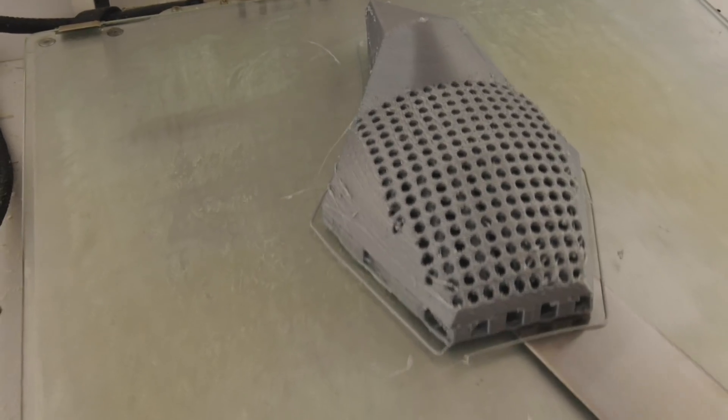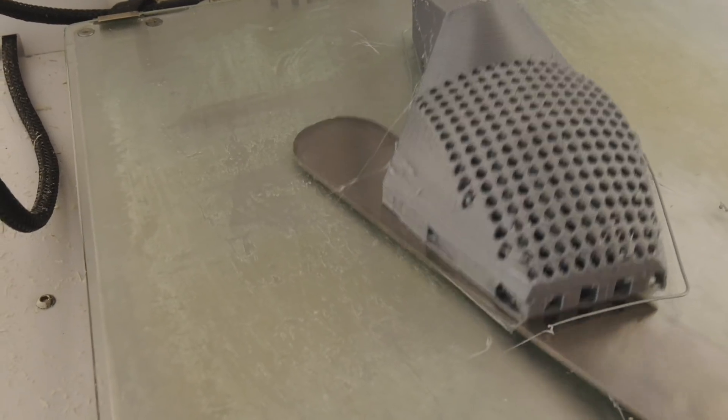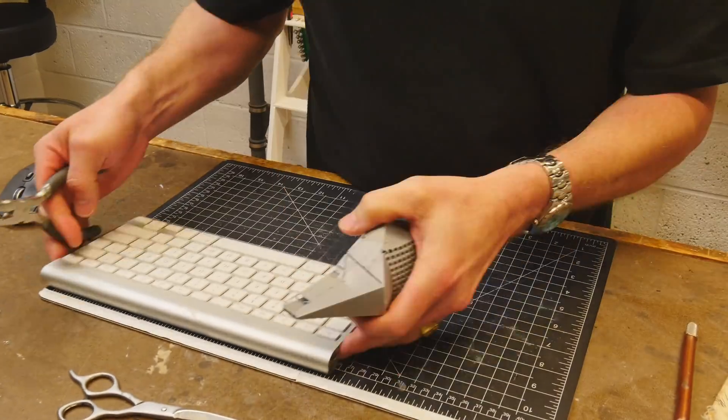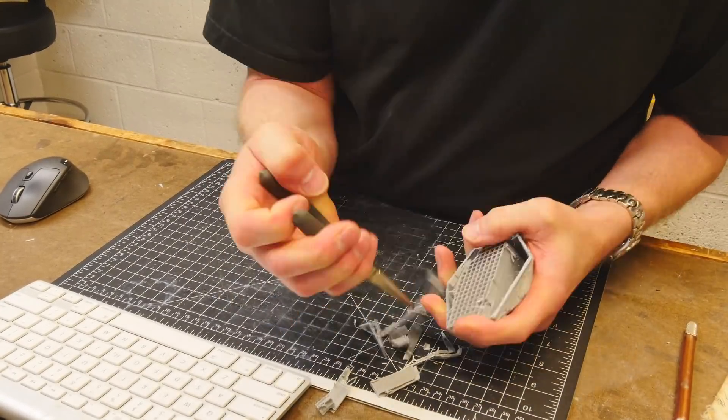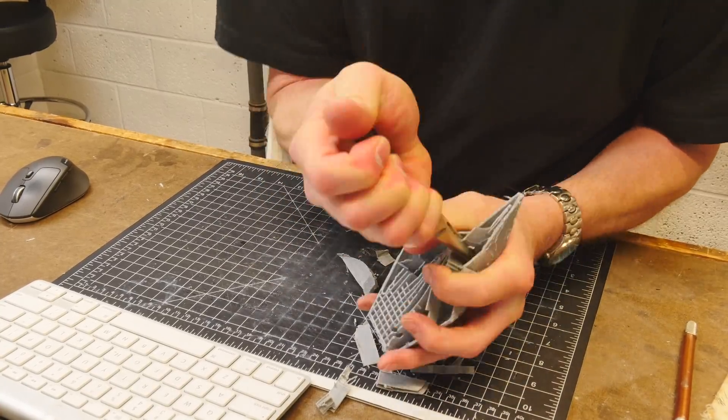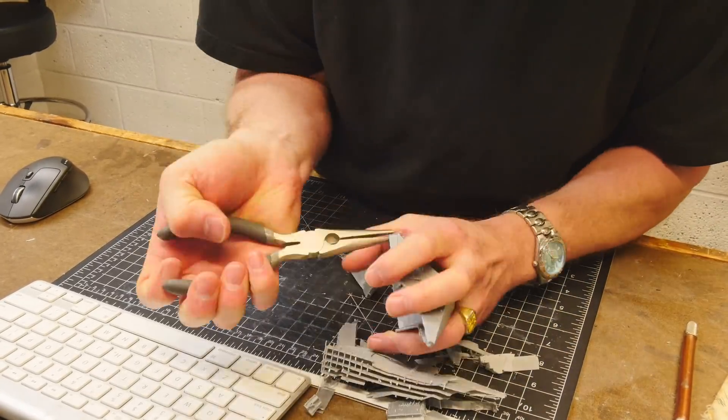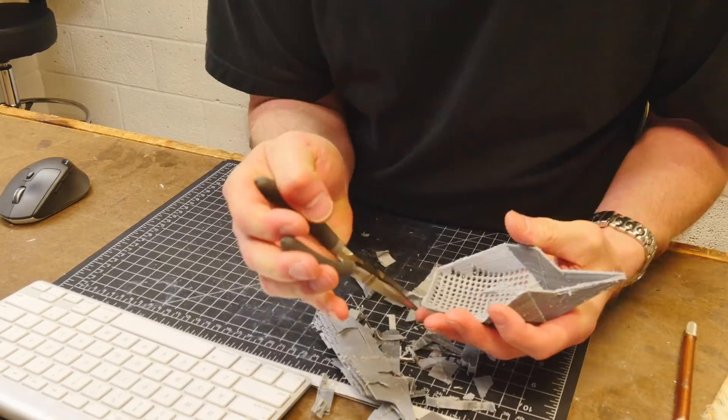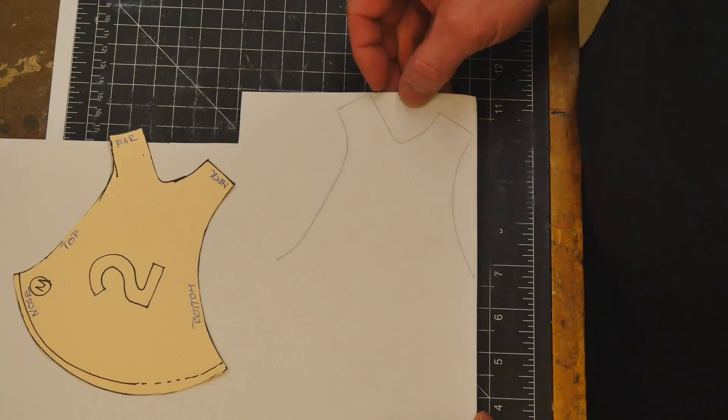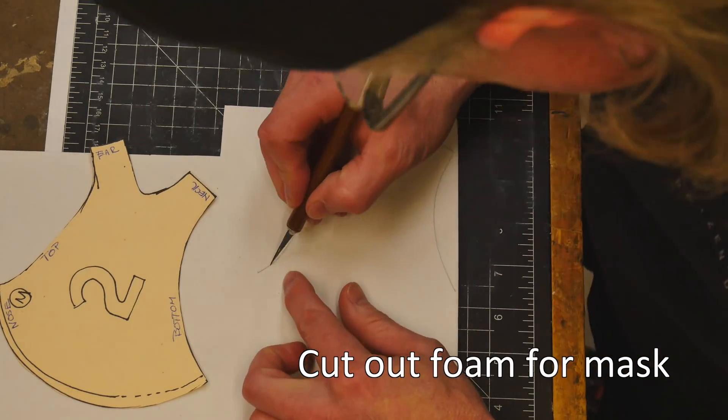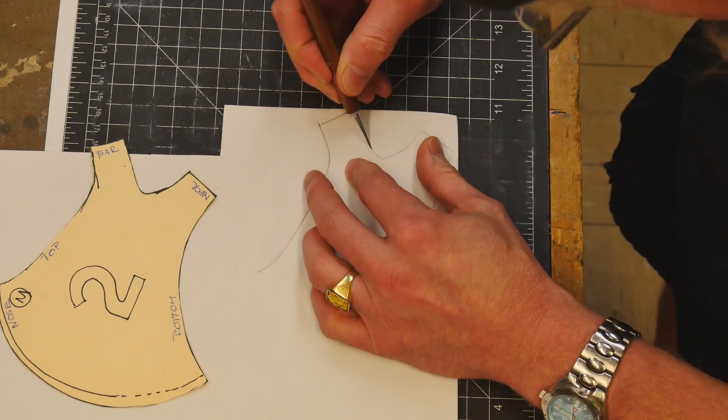Scraping it off the 3D printer and cleaning off all the support material. There is an upside to 3D printing this part: it's a pretty strong piece made out of PLA with good structure, and it's symmetrical on both sides.